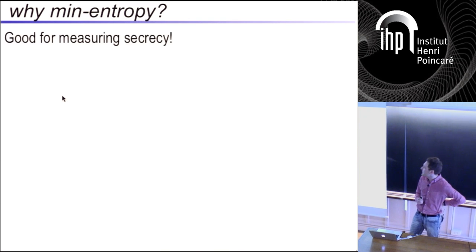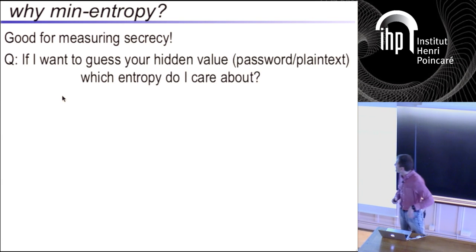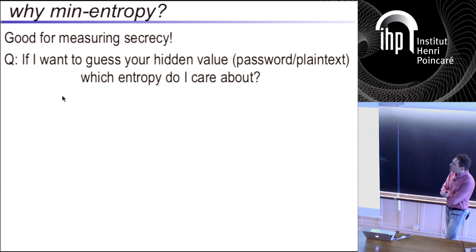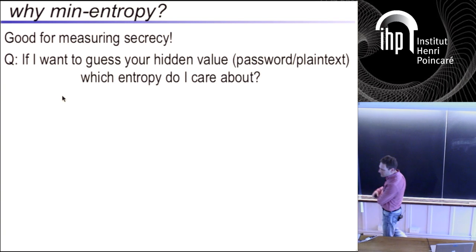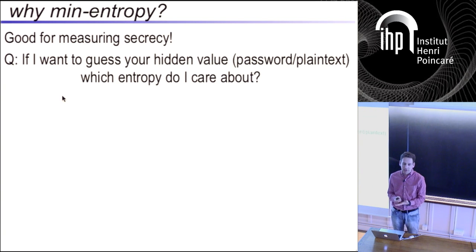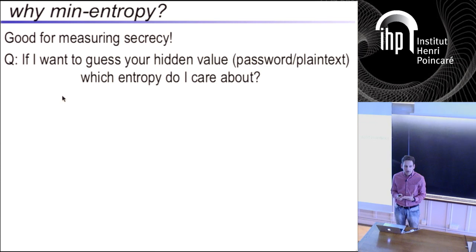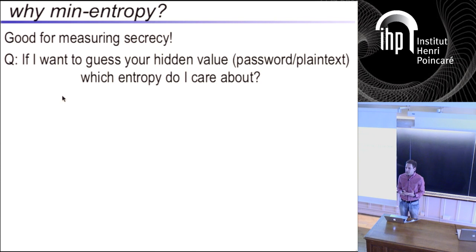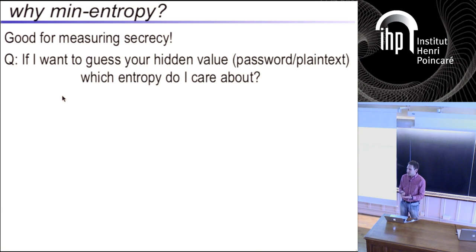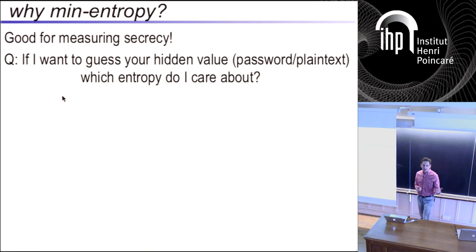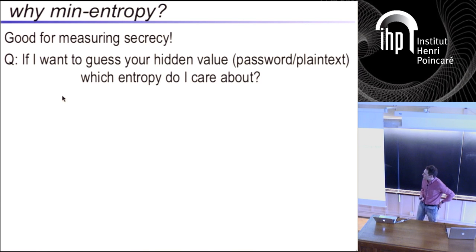I'm going to advertise min-entropy as the notion you often want. Min-entropy is good for measuring secrecy. If I have a password, and half the time my password is 12345 and the other half the time my password is a very long and very good random string, it has very high Shannon entropy — it's hard to compress. But it's still very easy to guess.